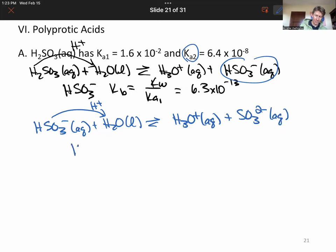And we can find the KB for sulfite. And it's going to be KW over Ka2. And we get for that one, 1.6 times 10 to the minus 7.